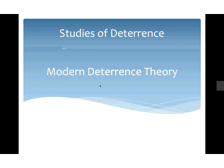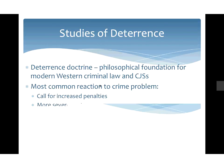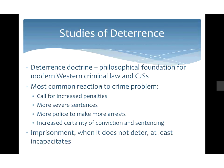What does modern deterrence theory tell us? The deterrence doctrine is a philosophical foundation for most criminal law and criminal justice systems in the West. It's generally our most common reaction to the crime problem — we call for harsher penalties, more severe sentences, more police, and increased certainty of conviction. Since it's hard to ensure certainty or celerity, we tend to focus instead on severity and often overreact. Imprisonment, if it doesn't deter somebody, at least serves incapacitation — though it doesn't prevent all crime, since inmates can still commit crimes against corrections officers, staff, and fellow inmates.